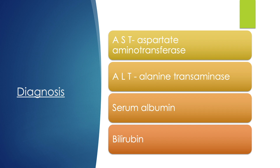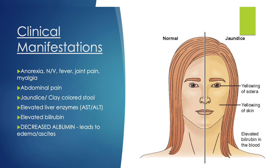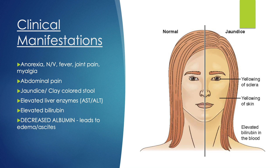An increase in bilirubin means it is not being excreted within stool, causing jaundice — yellowing of the skin and sclera of the eye — as well as clay-colored stools. Clinical manifestations of hepatitis include anorexia with weight loss due to decreased appetite, nausea and vomiting, arthralgia and myalgia (joint and muscle pain), and abdominal pain especially in the upper right quadrant where the liver is located. Jaundice will be seen due to inflammation increasing bilirubin concentration in the blood.